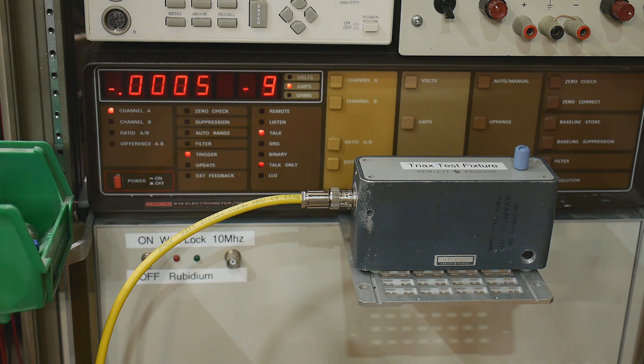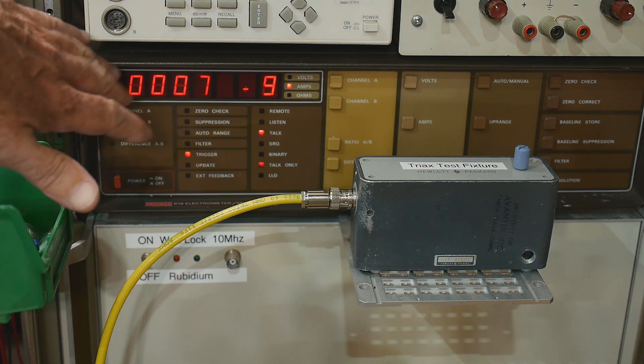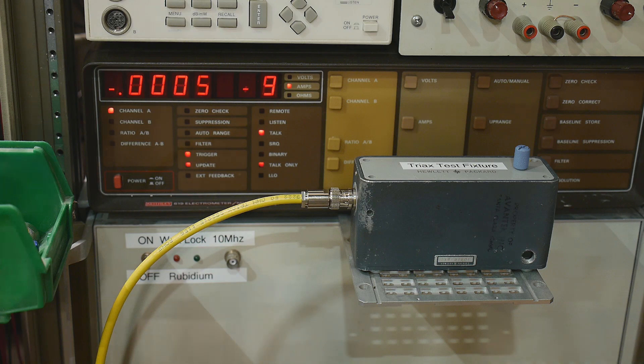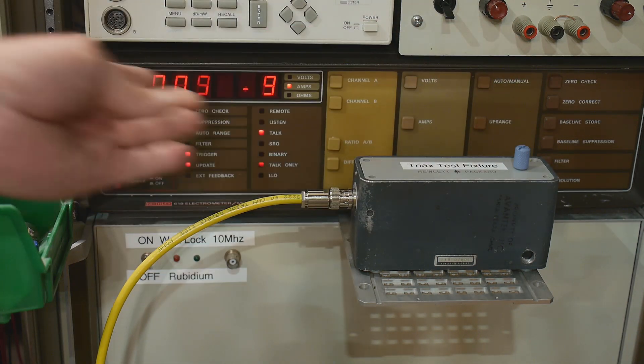So I showed this before. I used an LED as a photodiode, and I measured the current with an electrometer. So this is a Keithley 619, and I have a test fixture here so I can Faraday shield things. Right now we're measuring current.